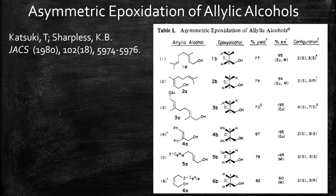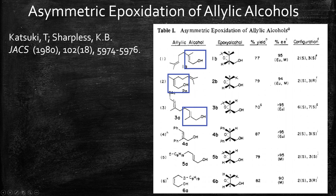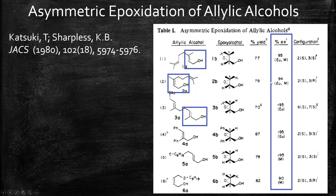Here's some data from the 1980 article, by Sharpless and Katsuki. You can see a variety of allylic alcohols that were used and the chiral epoxy alcohol that was generated. Even when there are two alkenes available, it's only the allylic alcohol that gets epoxidized. The substrates include cis, trans, and tri-substituted allylic alcohols — a nice variety. The yields are reasonable and the percent EE, the enantiomeric excess, is also quite good.